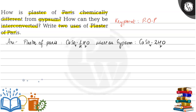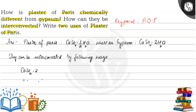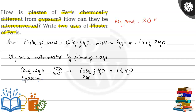How can they be interconverted? They can be interconverted in the following ways. If we heat calcium sulphate — that is gypsum — to 373 Kelvin, it will lose water and be left with only half water of crystallization; one and a half water will be lost. In this way, gypsum is converted into plaster of Paris.